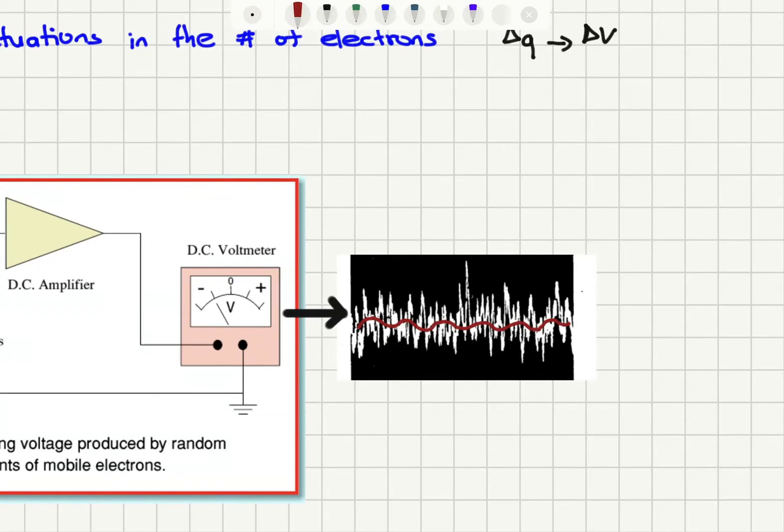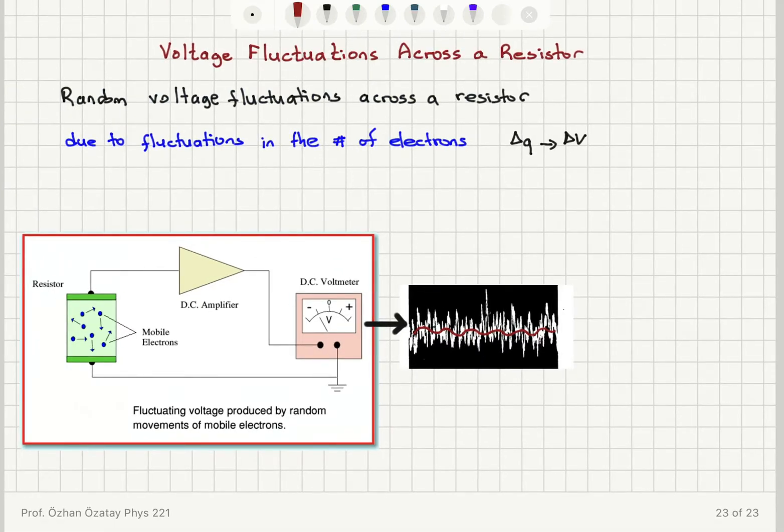Given that you have these fluctuations, they set a minimum detectable signal limit.